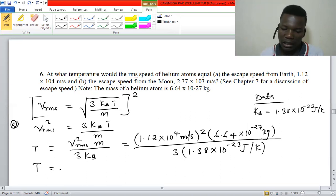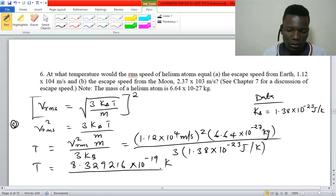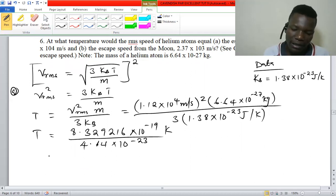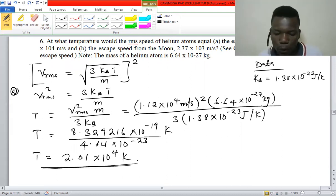So we punch that and we have 8.329216 × 10^-19 divided by 4.14 × 10^-23. So the final temperature, once we punch that, we get 2.02 × 10^4 kelvin.